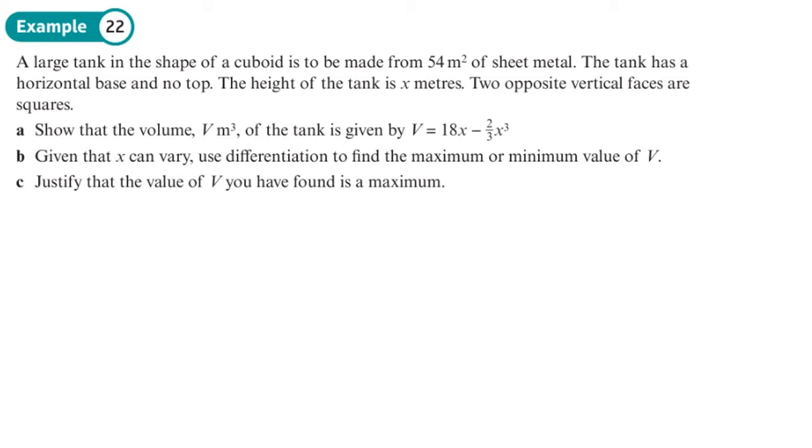A large tank is in the shape of a cuboid, that's handy, to be made from 54 meters squared of sheet metal. Let's just write these things down, or highlight them. So, cuboid, you've got 54 meters cubed of sheet metal. The tank has a horizontal base and no top. So it's going to look something like this. It's empty inside. An empty box with no top on it. The height of the tank is x meters.